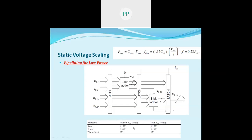The summary of invoking pipelining to reduce power: area is 1.15× in both cases, because although the function is divided into sub-blocks, interconnects and additional registers increase. Without VDD scaling, power increases but throughput doubles. With VDD scaling, while there is no improvement in area, power is reduced to 0.28× if throughput is maintained at the same level.